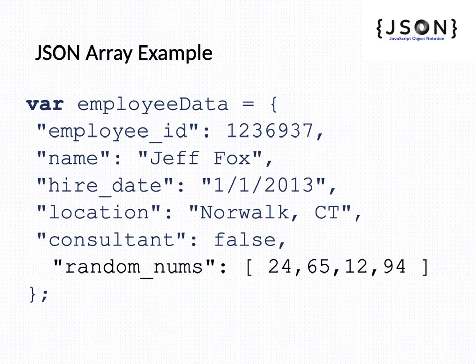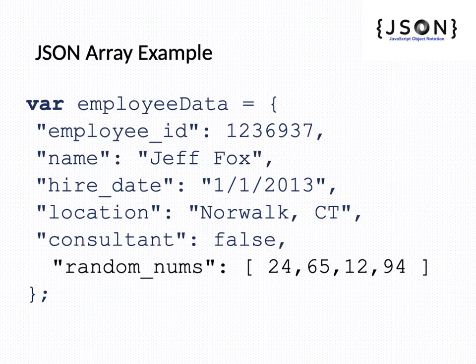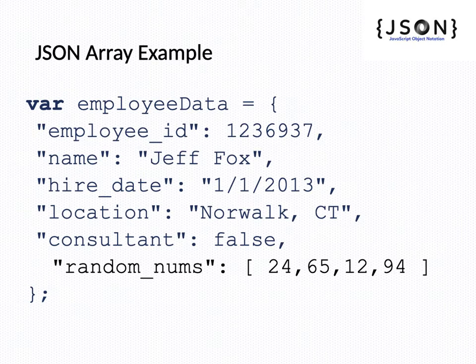Continuing the employee data example: location is Norwalk, consultant is false — these name-value pairs are mostly the same as the previous example. One additional name-value pair uses an array of values: random_nums colon [24, 65, 12, 94]. These four values are enclosed in square brackets, so the random number may be 24, 65, 12, or 94 depending on which is called by the program. This is how arrays are included in a JSON object.